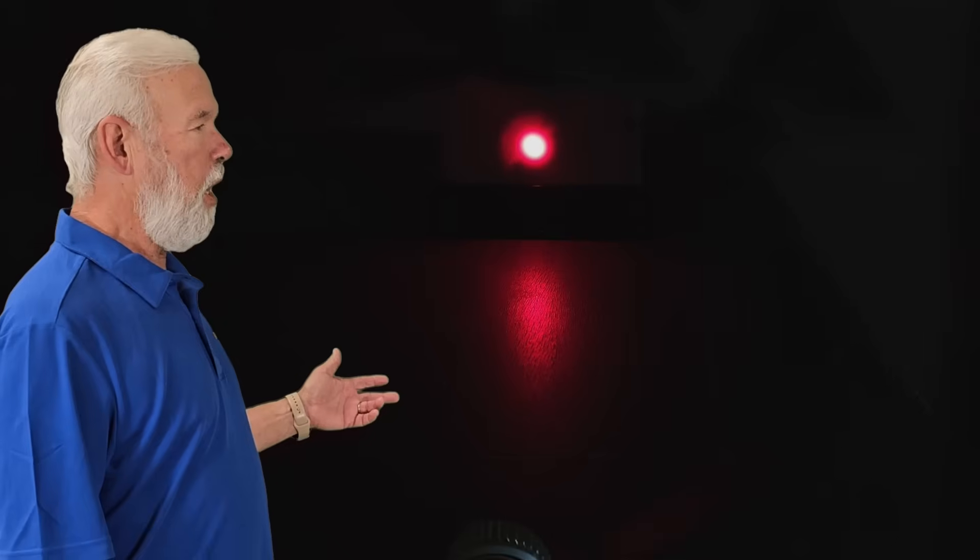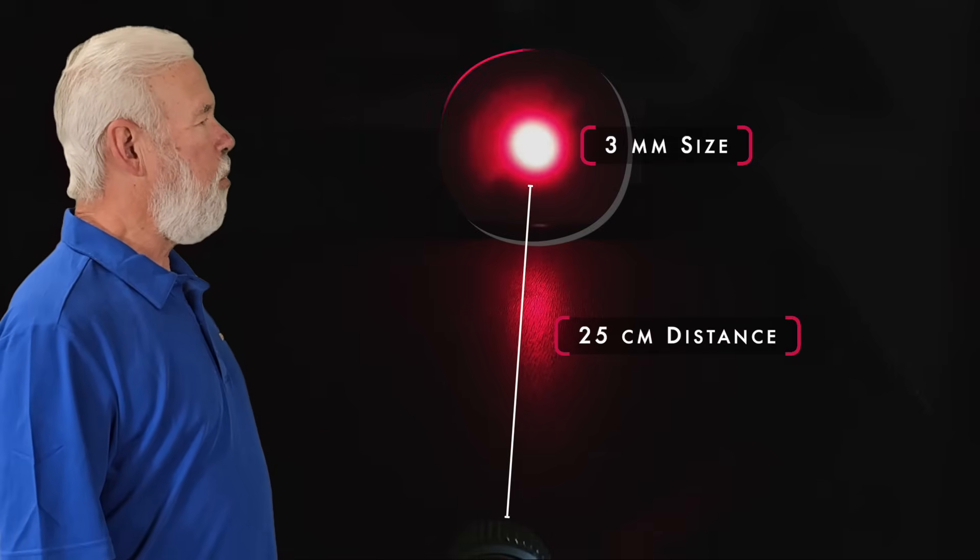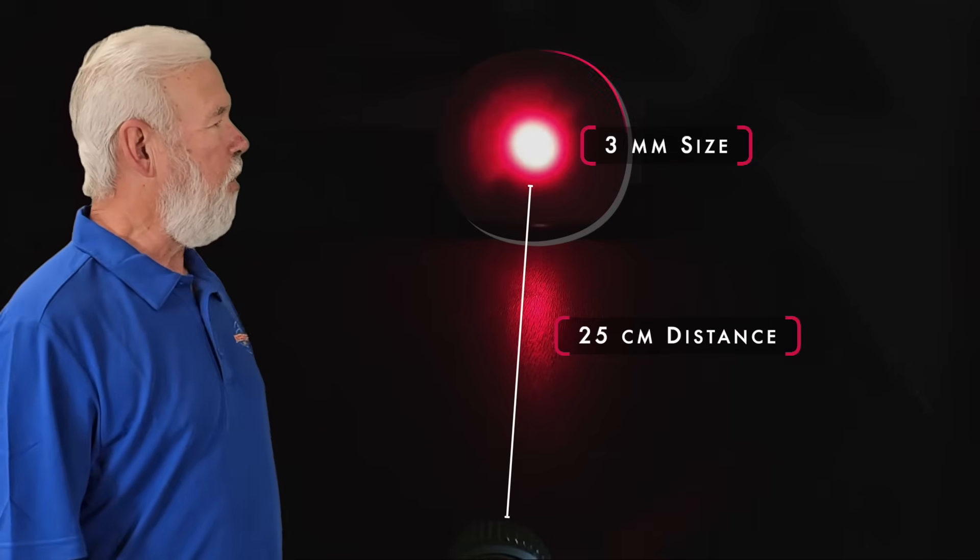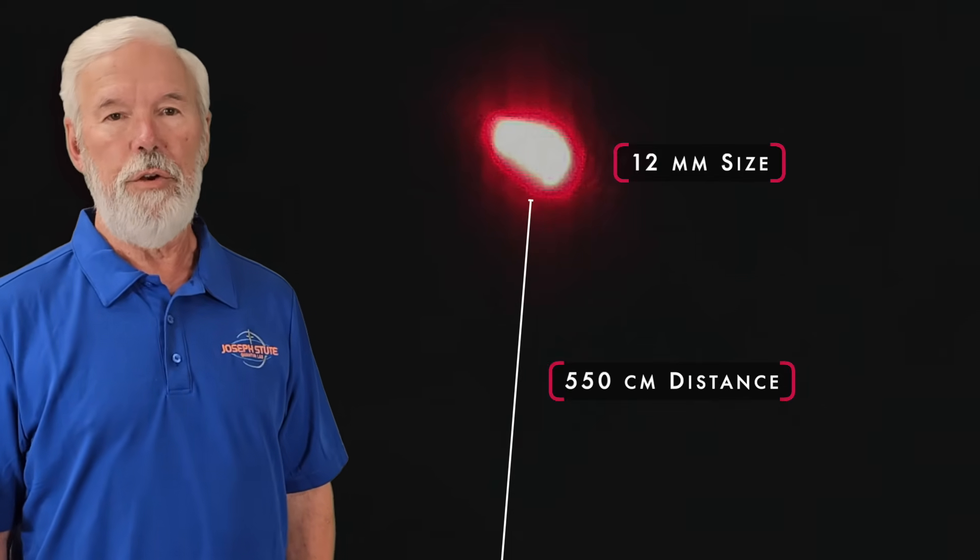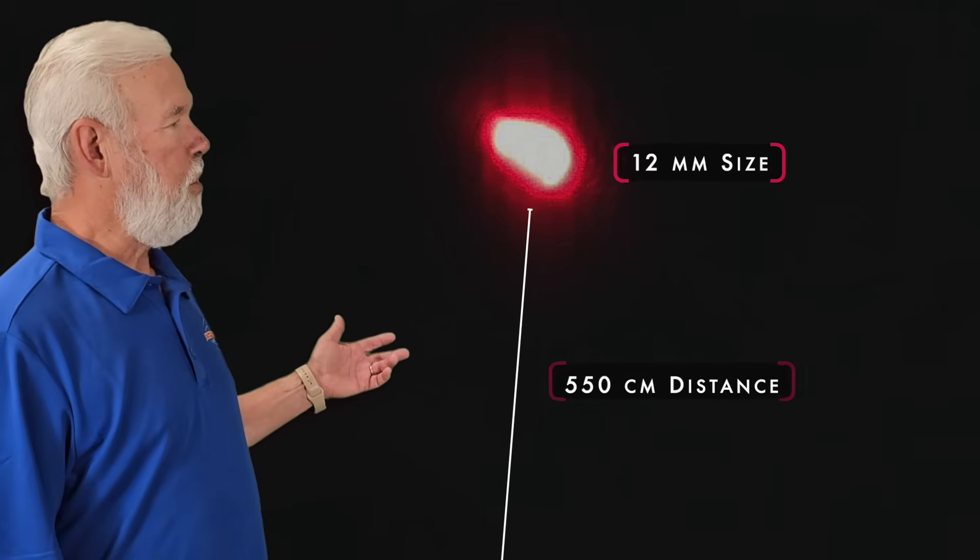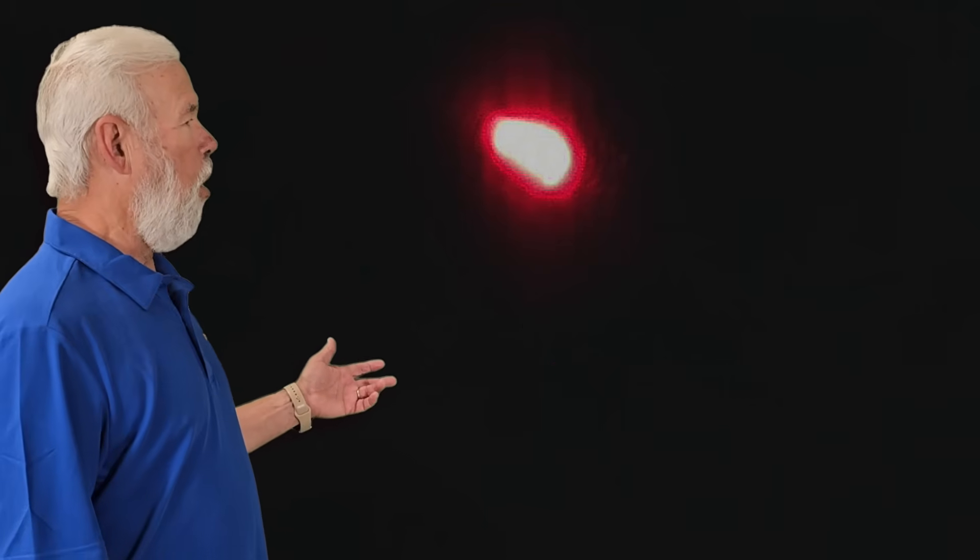With lenses in place, you see a 3mm dot at 25cm distance. When the screen is moved to 550cm, the dot increases to 12mm. The divergence you see is common to all lasers.